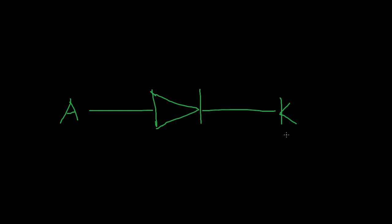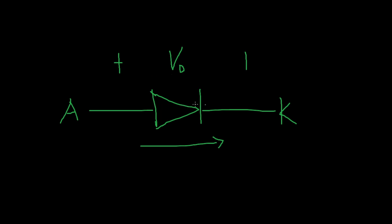For a diode, we have an anode and we have a cathode. The anode is the more positive side and the cathode is the more negative side. So whenever we apply a voltage to our diode, it's going to be in this direction. If the voltage across the diode is approximately zero, then no current is going to flow through the diode. However, if you increase this voltage, it's going to eventually turn on the diode and allow current to flow. Once you've reached the forward voltage VF, if you are above VF, current will flow through the diode completely unimpeded — that's not 100% true, but for our purposes it gets the point across.